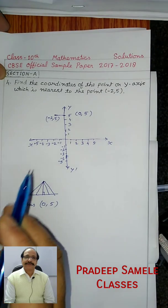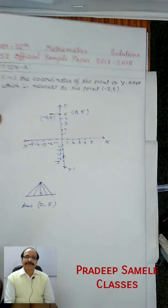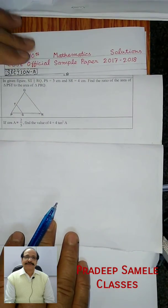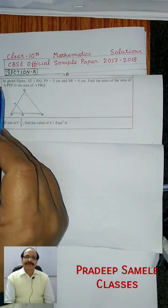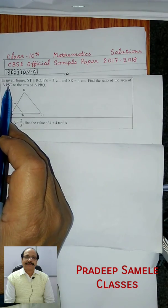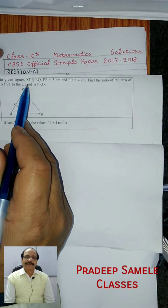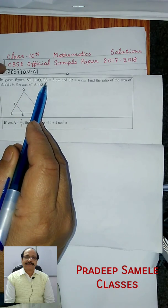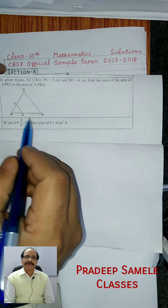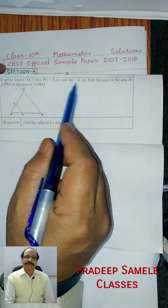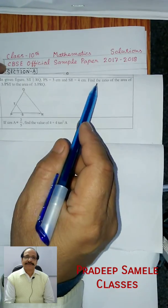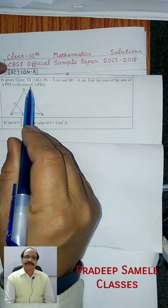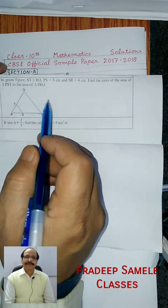So this is the answer — (0, 5). So the answer is question number 5, section E. In the given figure, ST is parallel to RQ, and PS is equal to 3 cm and SR is equal to 4 cm. Find the ratio of the area of triangle PST to the area of triangle PRQ.